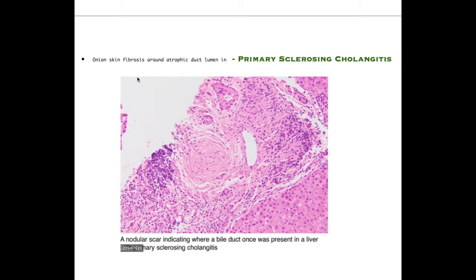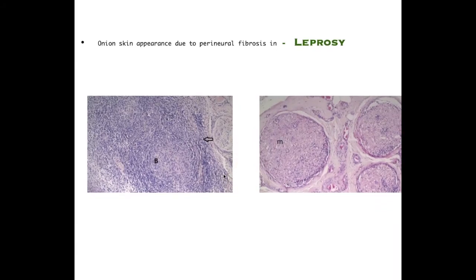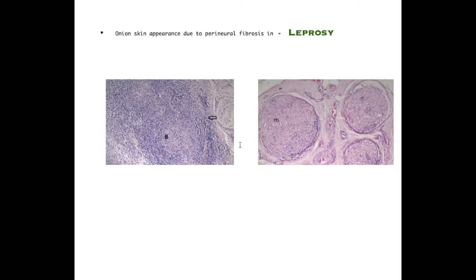The last disease is leprosy, also known as Hansen's disease. It is a long-term chronic infection caused by Mycobacterium leprae, mainly damaging the nerves and respiratory tract. When nerves are involved in leprosy, fibrosis occurs in those nerves, leading to an onion skin appearance due to perineural fibrosis, which is characteristically seen in leprosy.